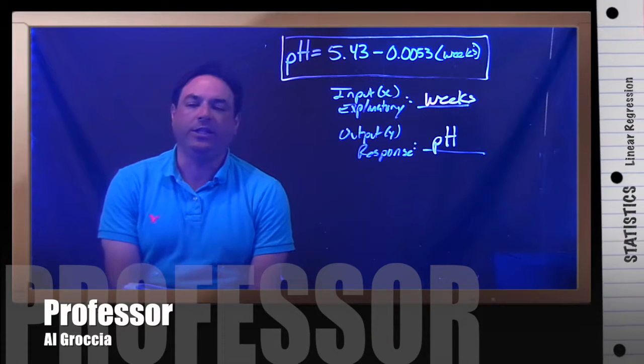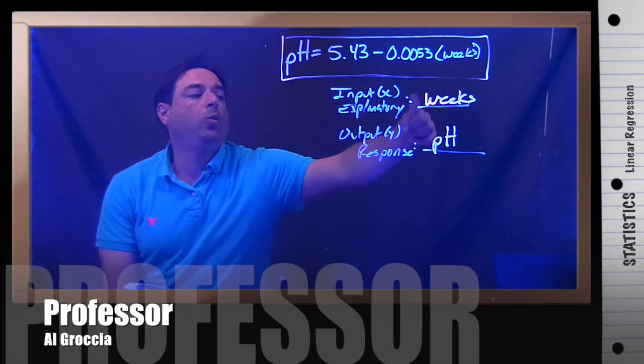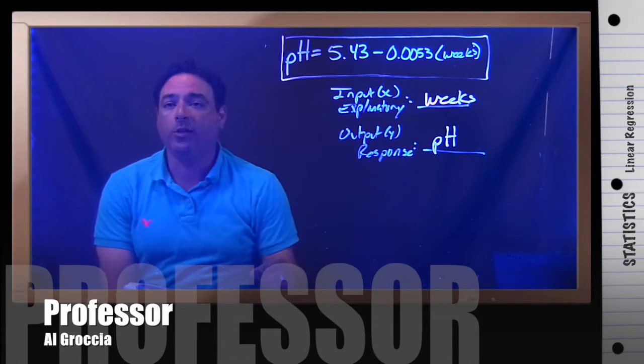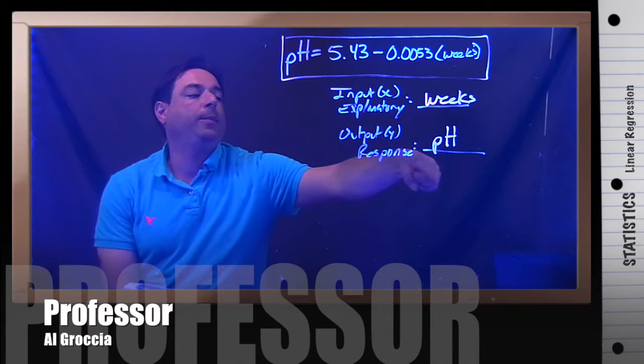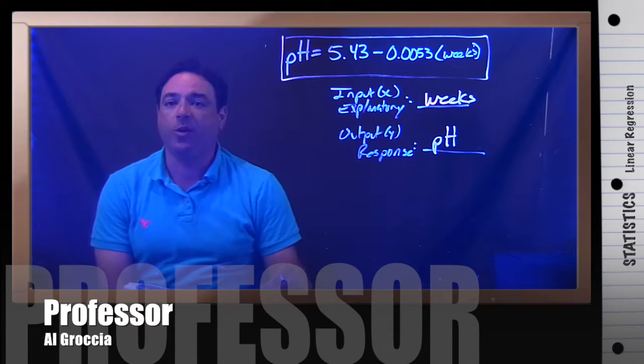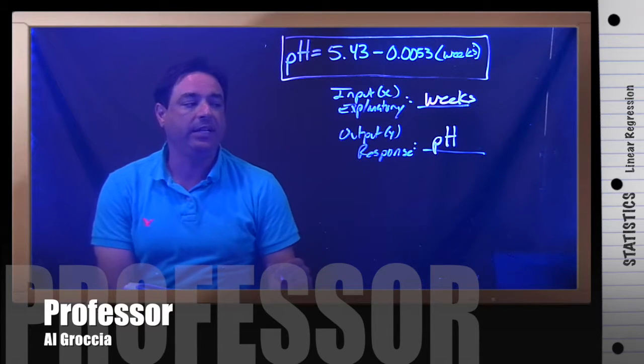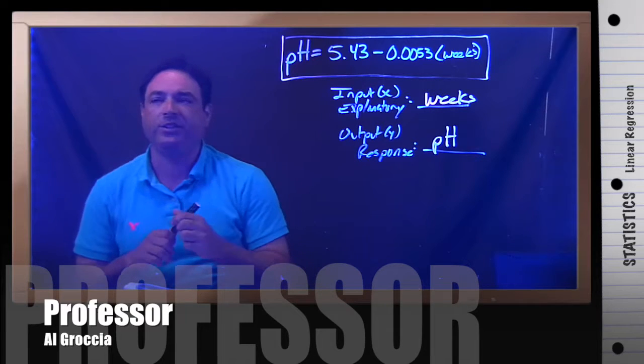We're given a linear regression equation which talks about weeks going by in a Colorado wilderness and measuring the pH as the weeks go by. So our input is weeks and our output is pH, and then we're asked some questions.